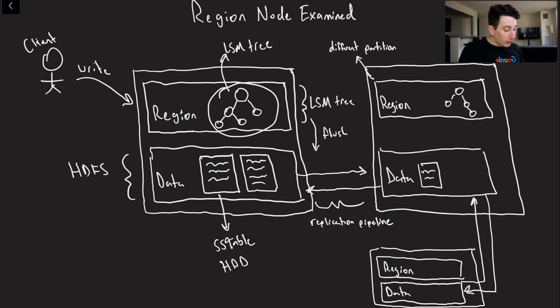And so basically what will happen is once this LSM tree on the region node gets too big, you can see that we're going to go ahead and flush it to an sstable on disk on the data node.